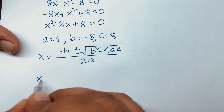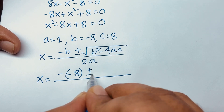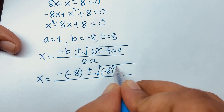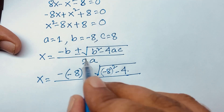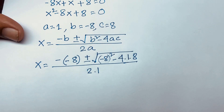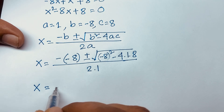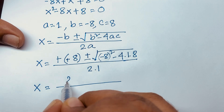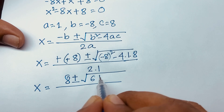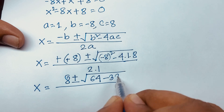Using the quadratic formula, x is equal to minus b plus or minus square root of b squared minus 4ac over 2a. Substituting the values: x equals minus of minus 8, plus or minus square root of (minus 8) squared minus 4 times 1 times 8, over 2 times 1.